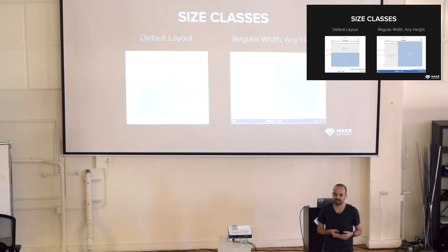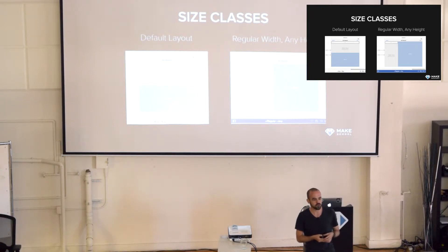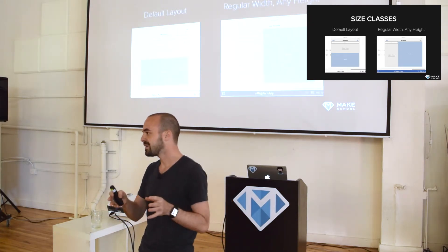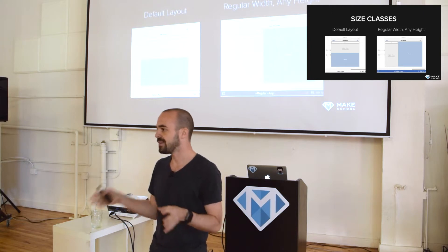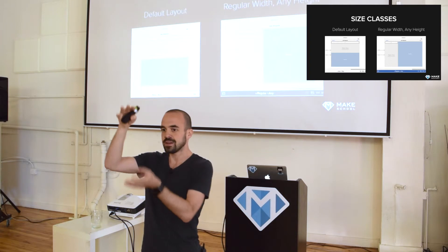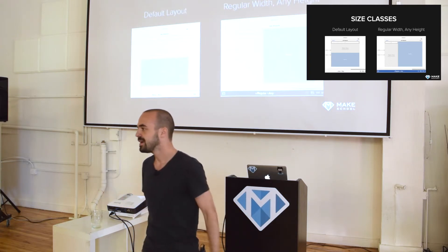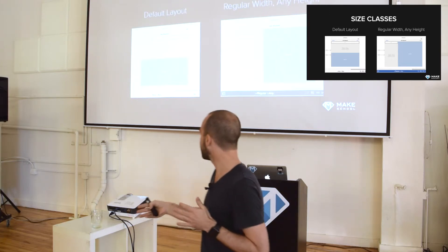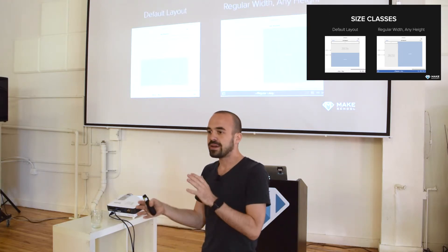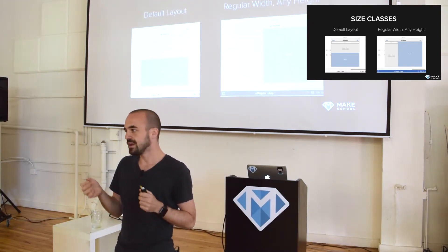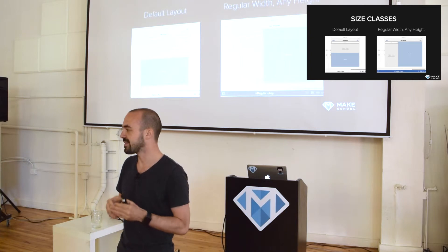Size classes are new since iOS 8, and they have been introduced to help you address different screen sizes. In the past, a lot of developers would basically try to detect the current device type and have specific rendering code for each device — you would see in code like: if iPhone, do this; if iPad, do this. But at some point this got out of hand because a lot of different devices with different orientations have been added.